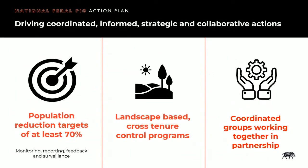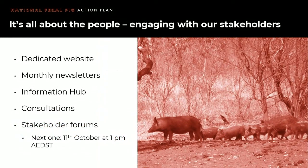I'm working with all those around Australia to make much-needed differences to achieve the plan's vision and reduce impacts being caused by feral pigs. The key focus points of the plan are reducing feral pig populations by at least 70% annually with cost-effectively measured and monitored targets, supporting landscape-based cross-tenure control programs, and having strong networks of coordinated management groups working together in partnerships. Our next stakeholder forum will be held next Monday, focused on feral pig management planning and providing practical advice for applying best practice management on the ground — it will be recorded and available via our website. Thanks for your time.